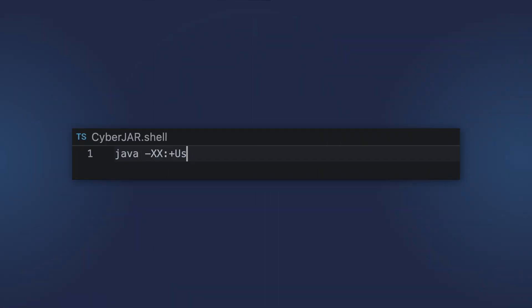ConcurrentMarkSweep GC was used in earlier Java versions. It was designed for shorter pauses and used multiple threads to perform the collection, but it is suitable only for applications that can afford to share processor resources with the garbage collector. This collector was deprecated in Java 9 and removed in Java 14.